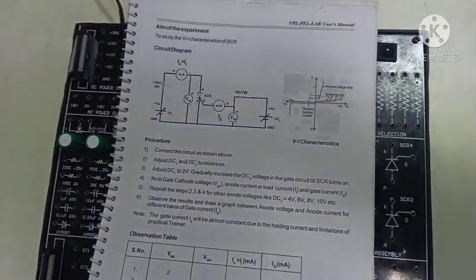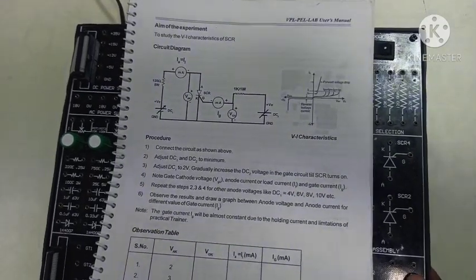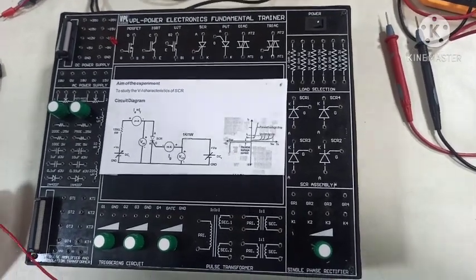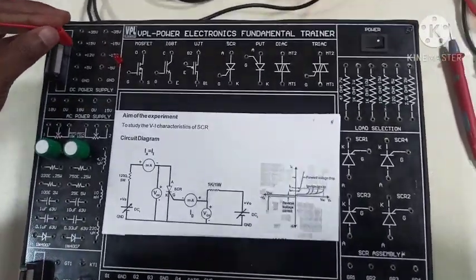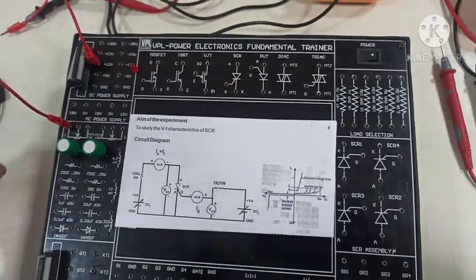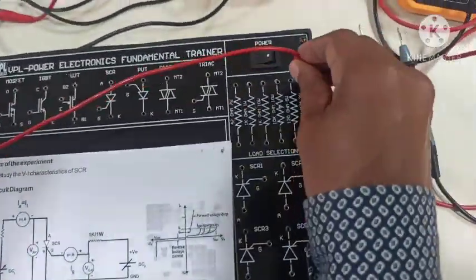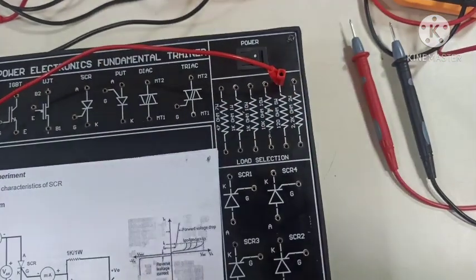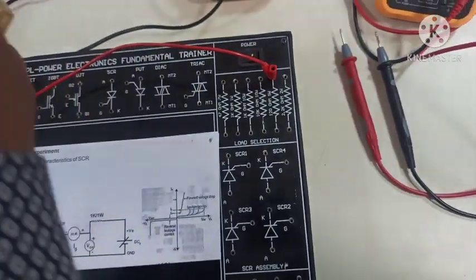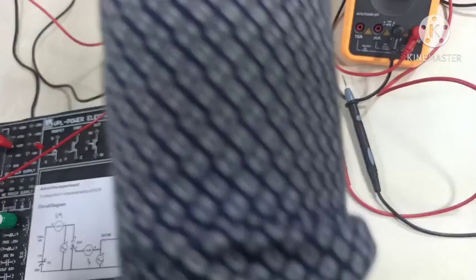Now, let us connect the circuit as per the circuit diagram to study the VI characteristics of SCR. For this, we have to connect the circuit as per the circuit diagram. Here, I will take the plus 12V, then connect to the potentiometer, then from here I will connect to a 120 Ohm resistor.